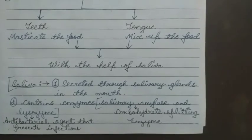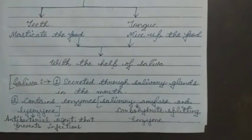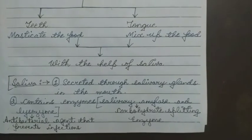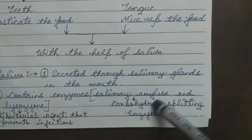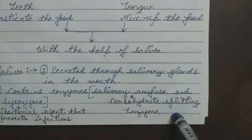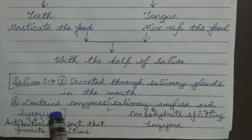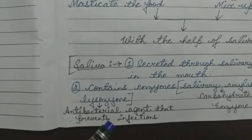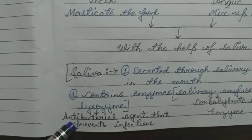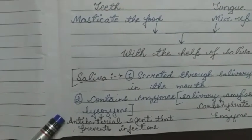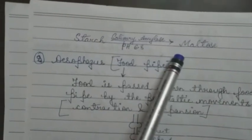With the help of enzymes, our food is easily digested within a few hours. If enzymes were not present in our body, food would take many years to digest. The two enzymes present in saliva are: number one, salivary amylase — a carbohydrate-splitting enzyme that helps split carbohydrates; and number two, lysozyme — an antibacterial agent that prevents bacterial infections from bacteria entering our mouth.